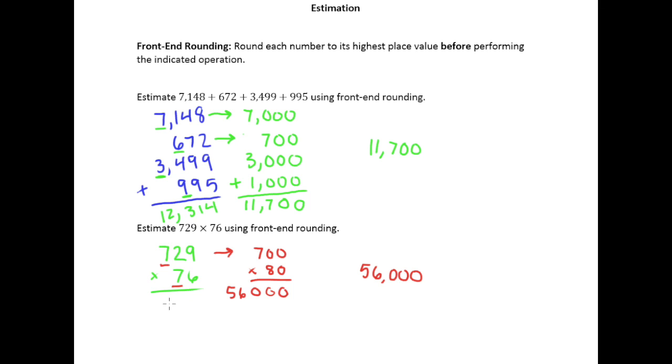And just for your information, if you work this product out, what we should get is 55,404. So again, relatively speaking, we're in the neighborhood with this front-end rounding.